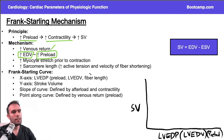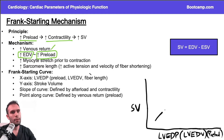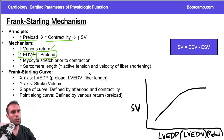So as the left ventricular end-diastolic pressure — or preload — goes up, the stroke volume is going to go up as well. Eventually there's a point where this levels off. That's the general shape of the curve, and that's what you want to know.